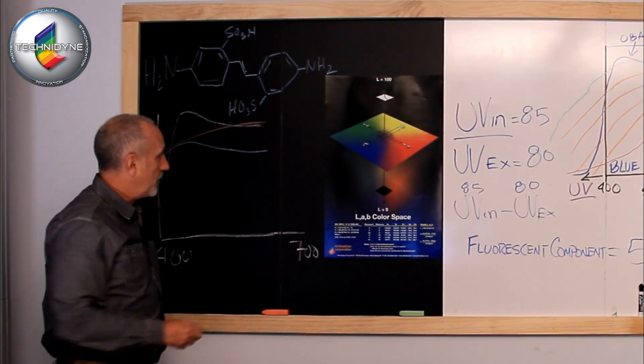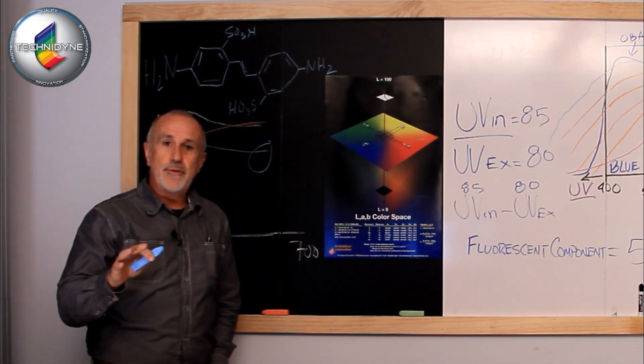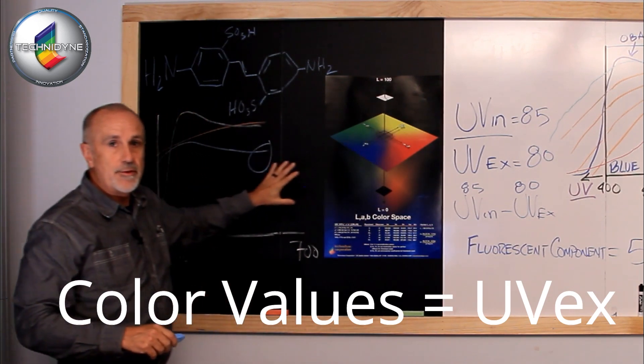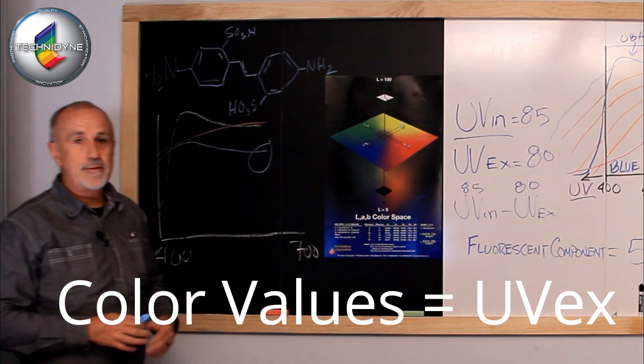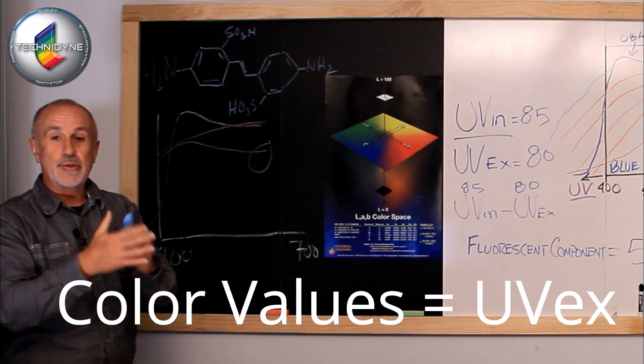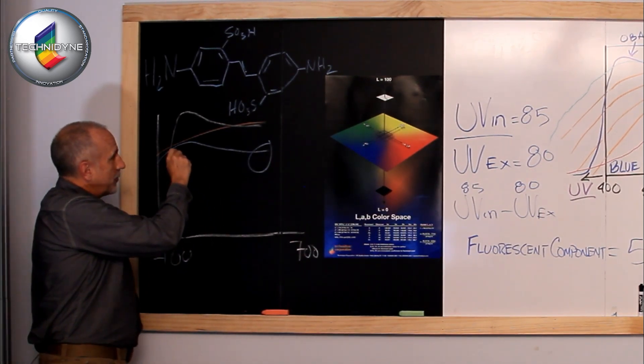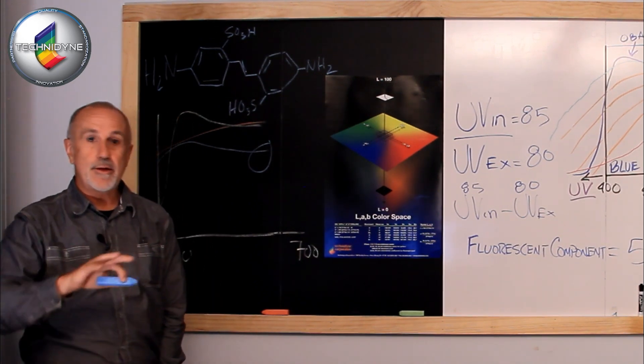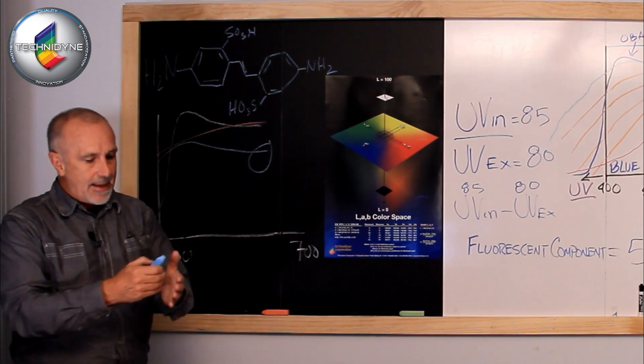Now what they do is they control the dye addition. Under that, what they'll do is they'll do their color measurement, their LA and B values, under a UV excluded light source. Let's say with the Color Touch X, we've driven that 420 cutoff filter all the way in so there's no UV energy getting into the sphere. By doing that, they're looking at the color additions or dye additions based on UV excluded without any impact of the optical brightener, and that allows them to separate the impact of that dye addition.